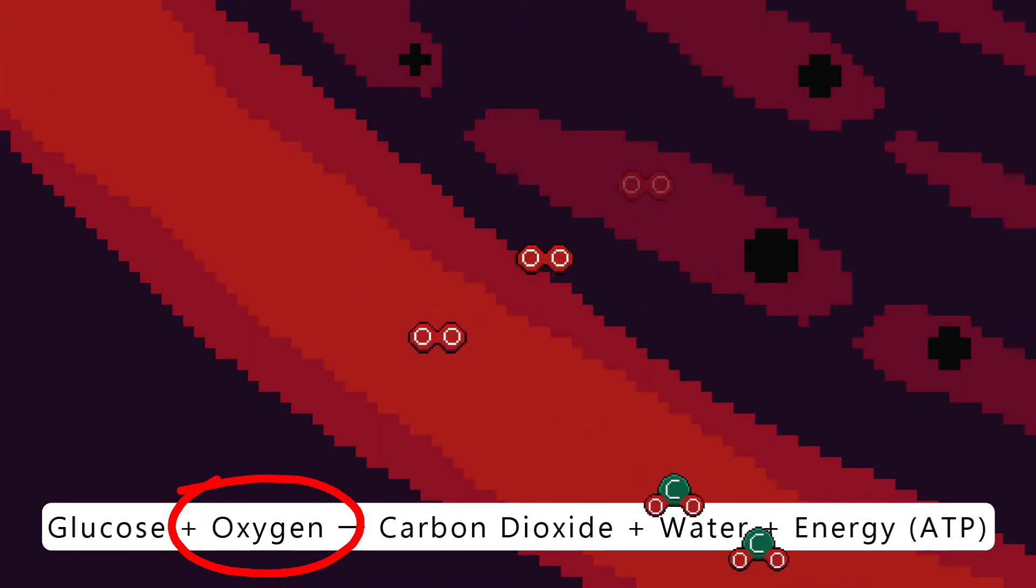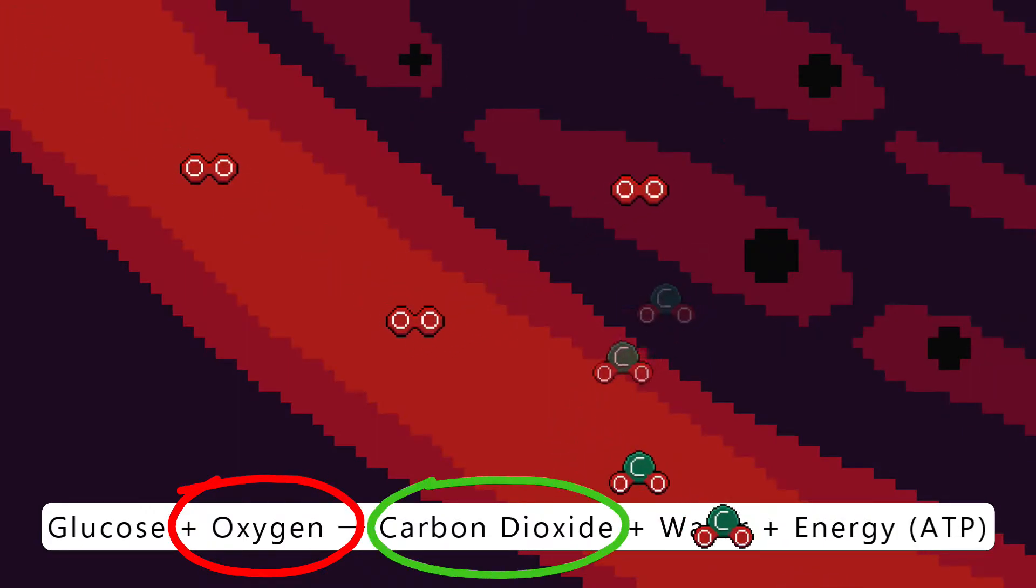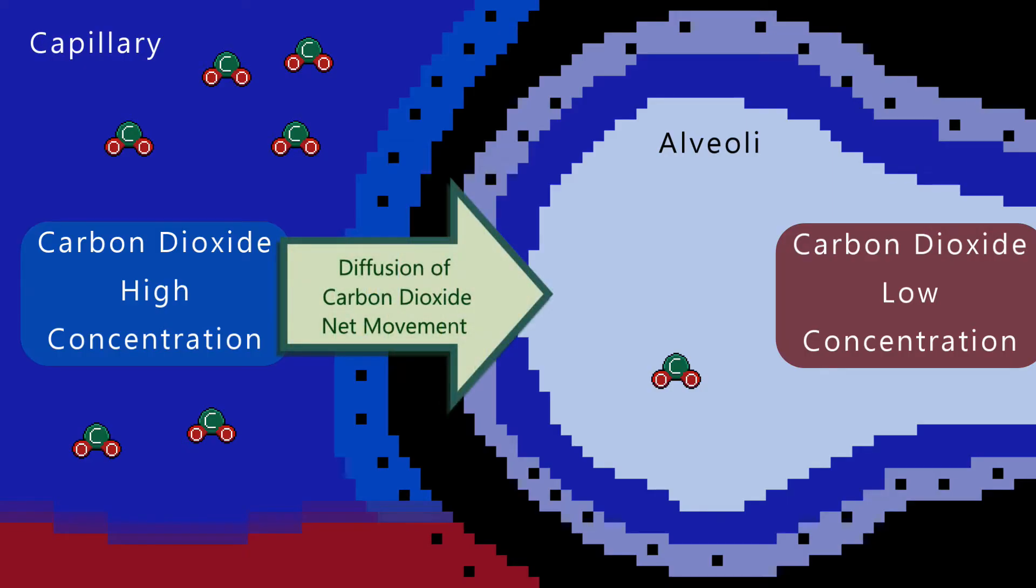The cells produce carbon dioxide, so the blood always has a higher concentration of carbon dioxide compared to the alveoli.